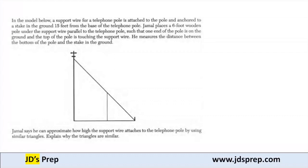Hello, welcome to JD's Prep. In the model below, a support wire for a telephone pole is attached to the pole and anchored to a stake in the ground, 15 feet from the base of the telephone pole. Jamal places a 6-foot wooden pole under the support wire, parallel to the telephone pole.